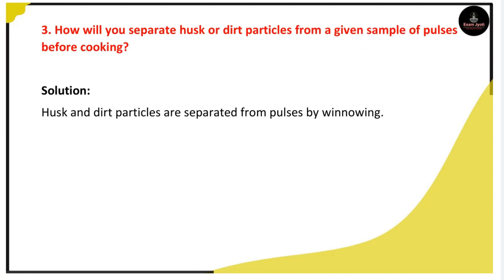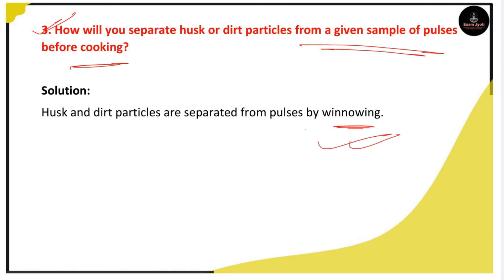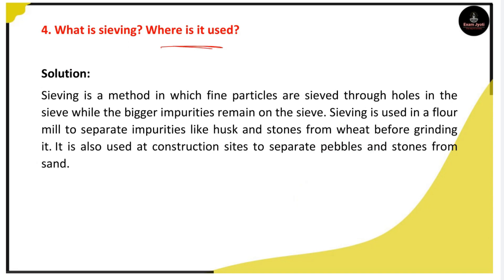Next question: How will you separate husk or dirt particles from a given sample of pulses before cooking? We can separate the husk from pulses by winnowing, meaning the process of Zora Propriya.